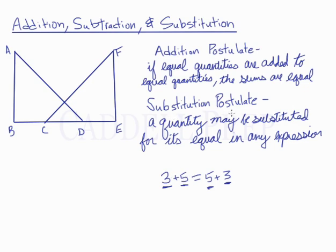Then the substitution postulate: a quantity may be substituted for its equal in any expression. So in this example, 3 plus 5 we know is 8, so rather than writing 3 plus 5 we can substitute that with 8. And on this side, we know 5 plus 3 is 8, so we substitute 8 in for 5 plus 3.